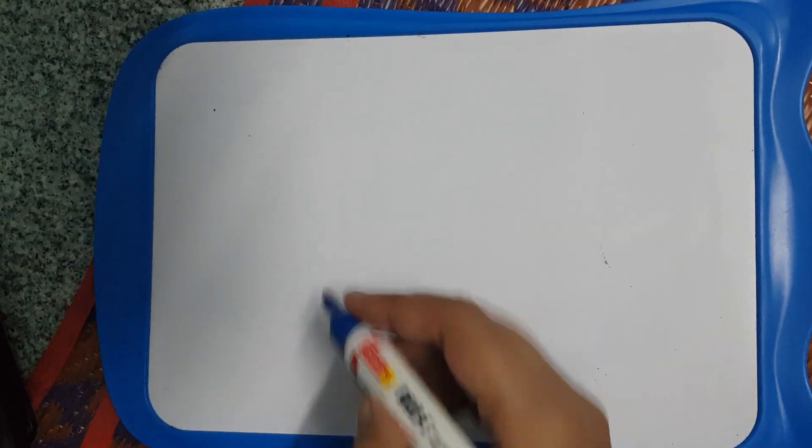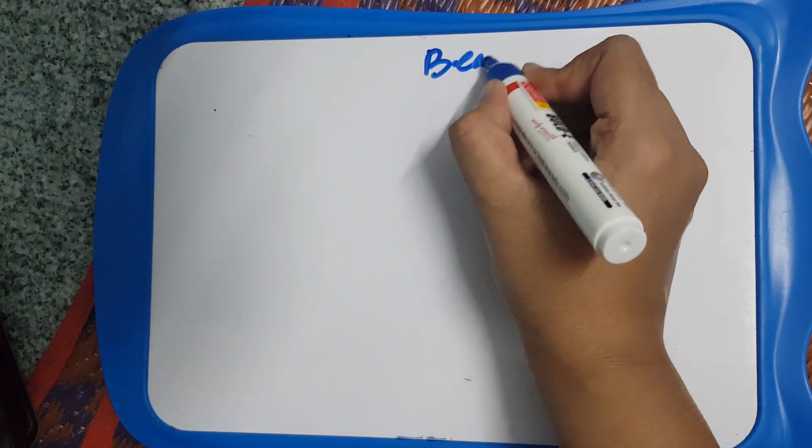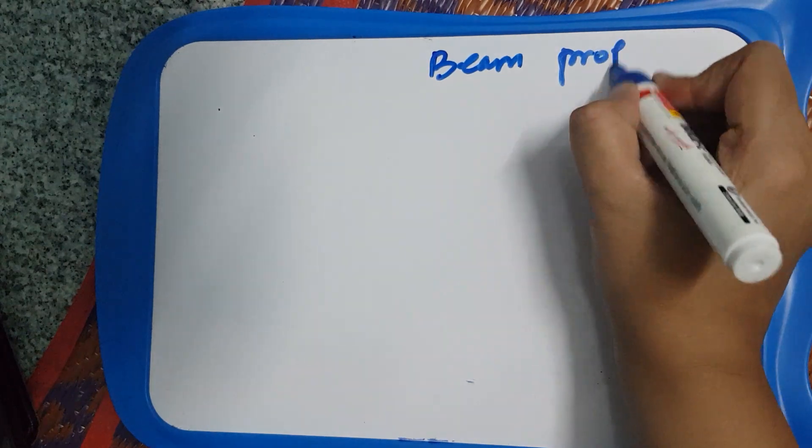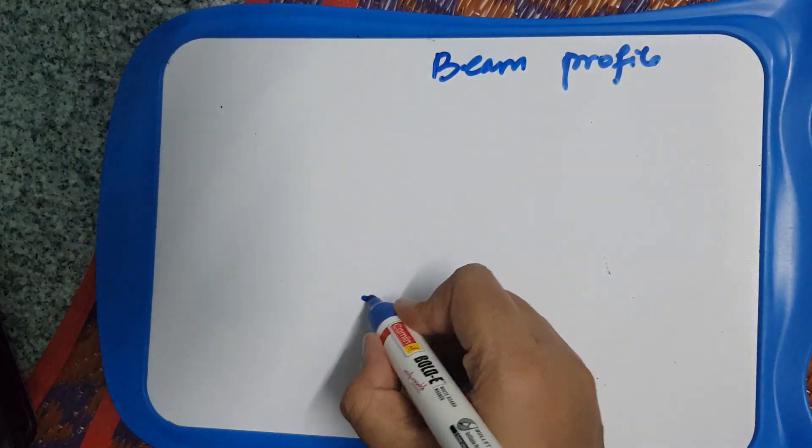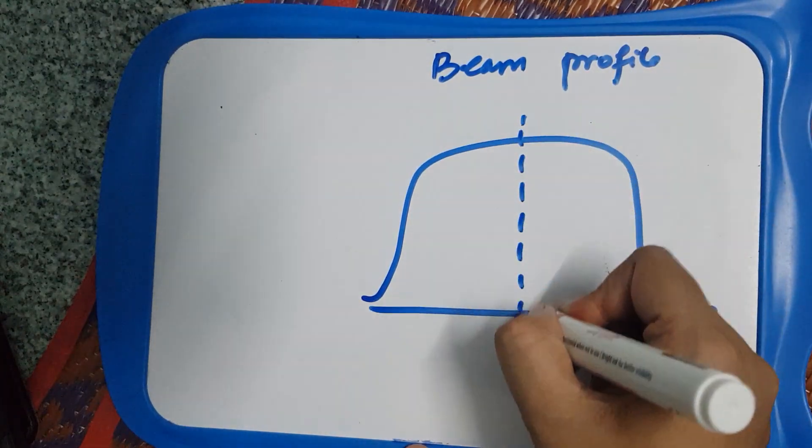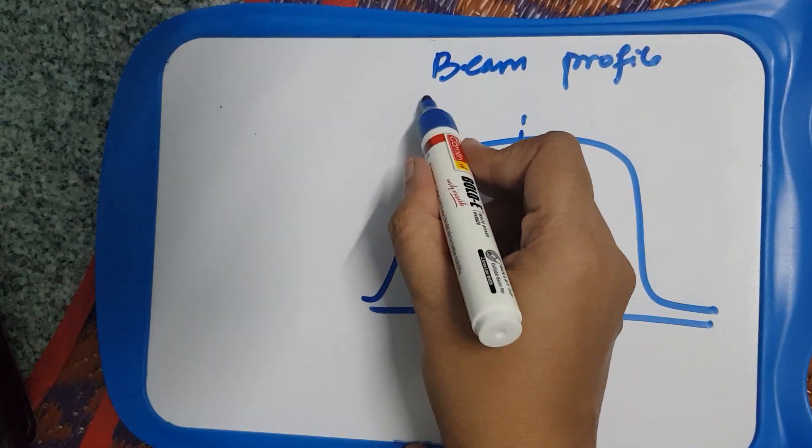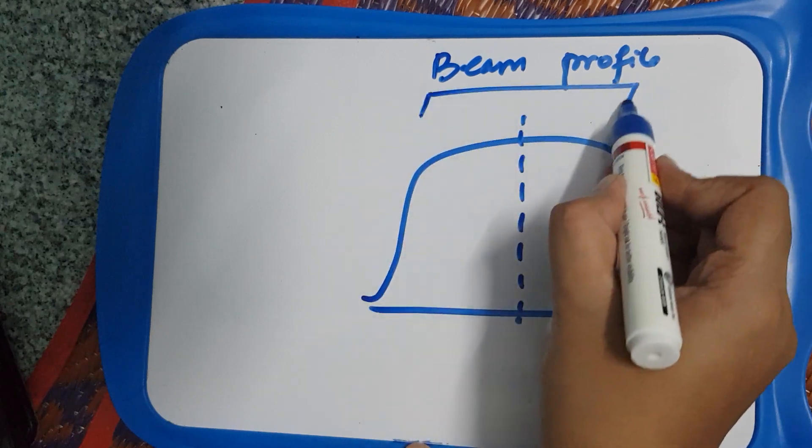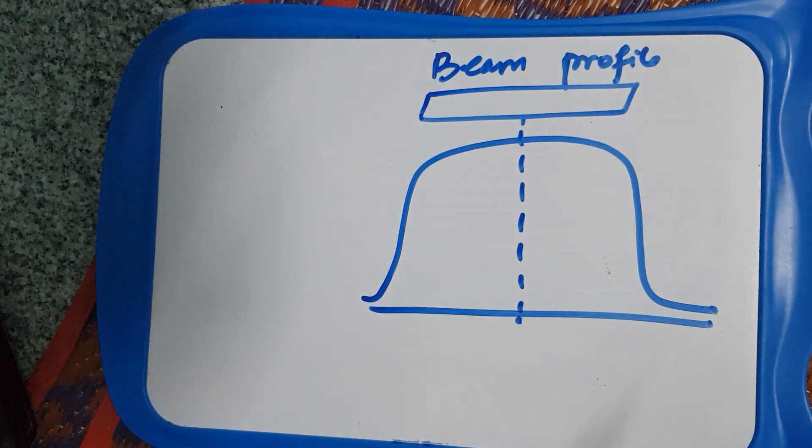Hi, so today I'll be talking about beam profile or beam geometry. We have read that the beam profile kind of looks like this, so this is a central axis and it's usually opened at 10 degrees, for example.